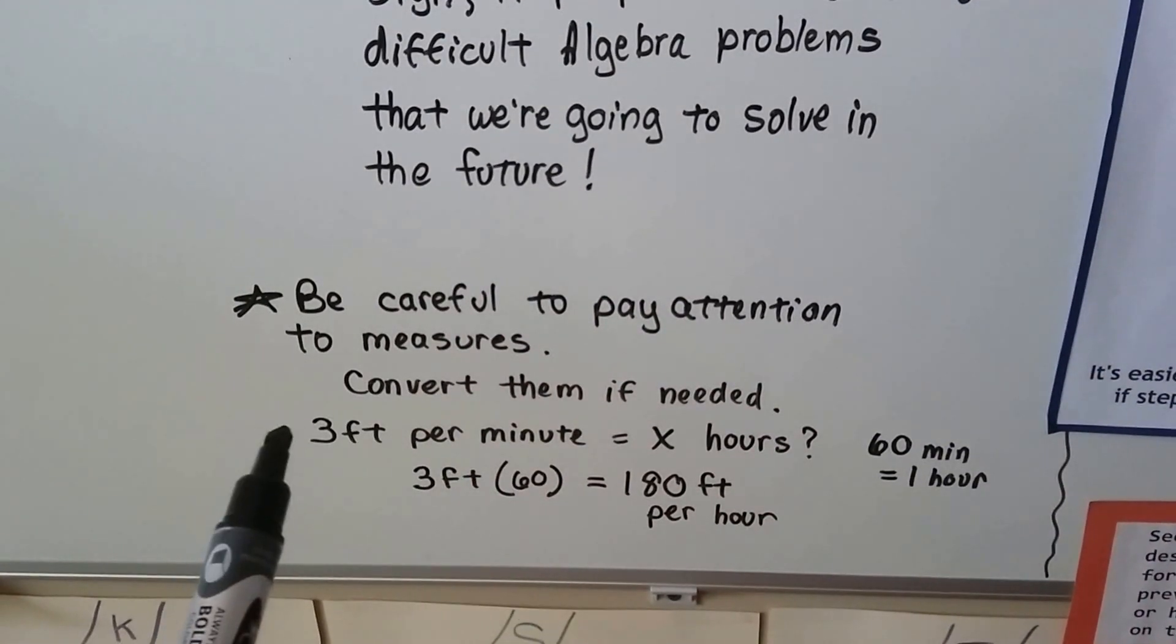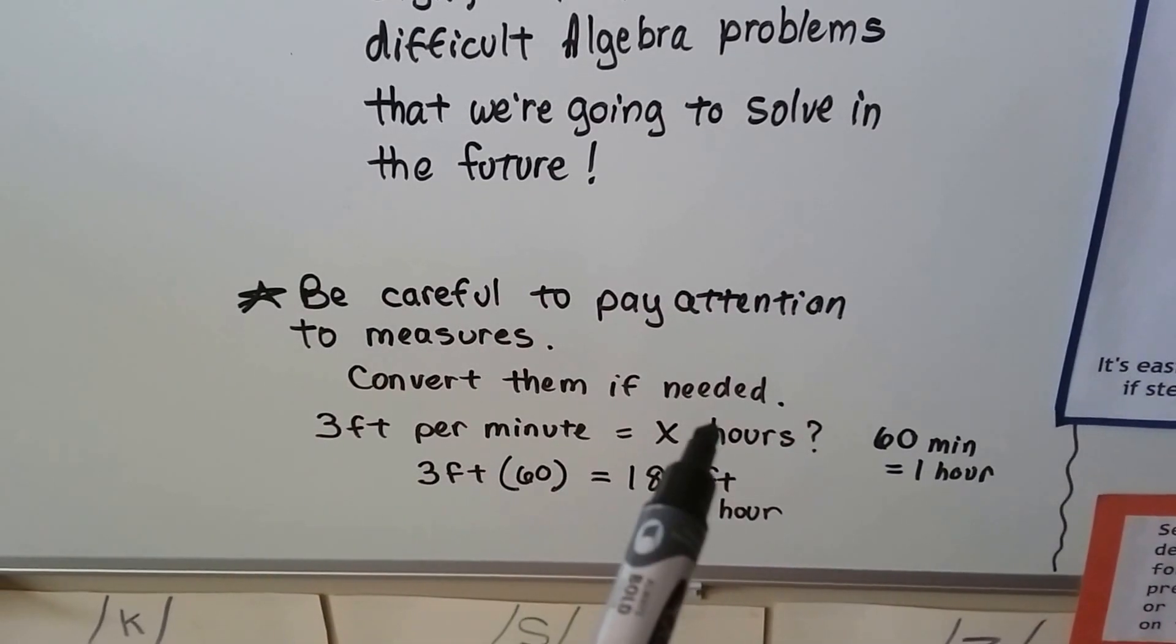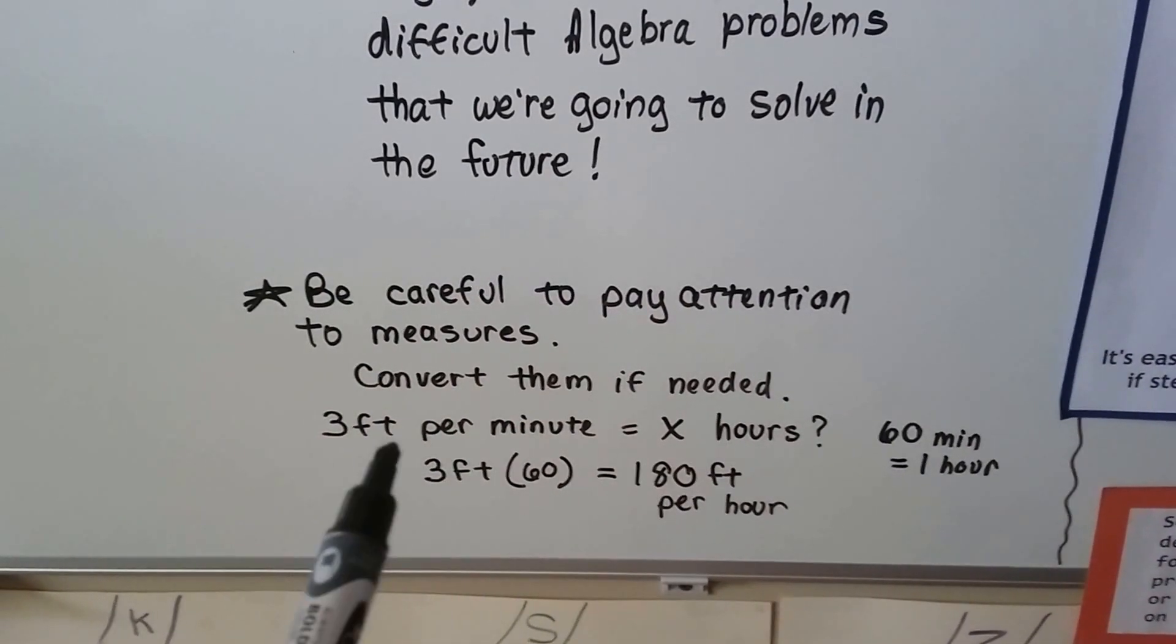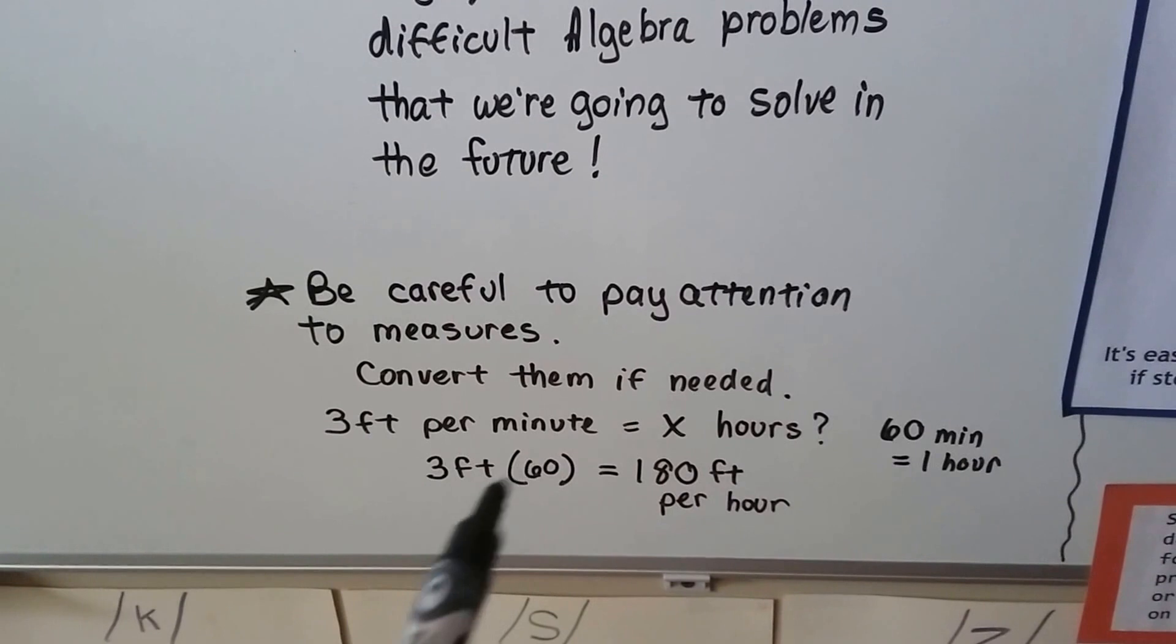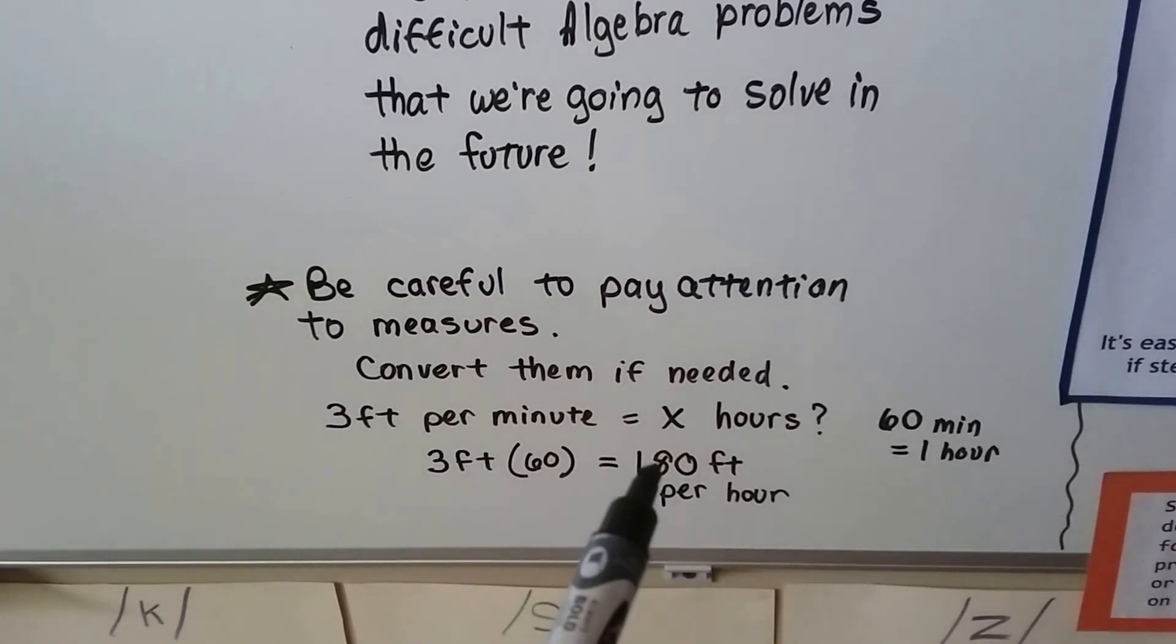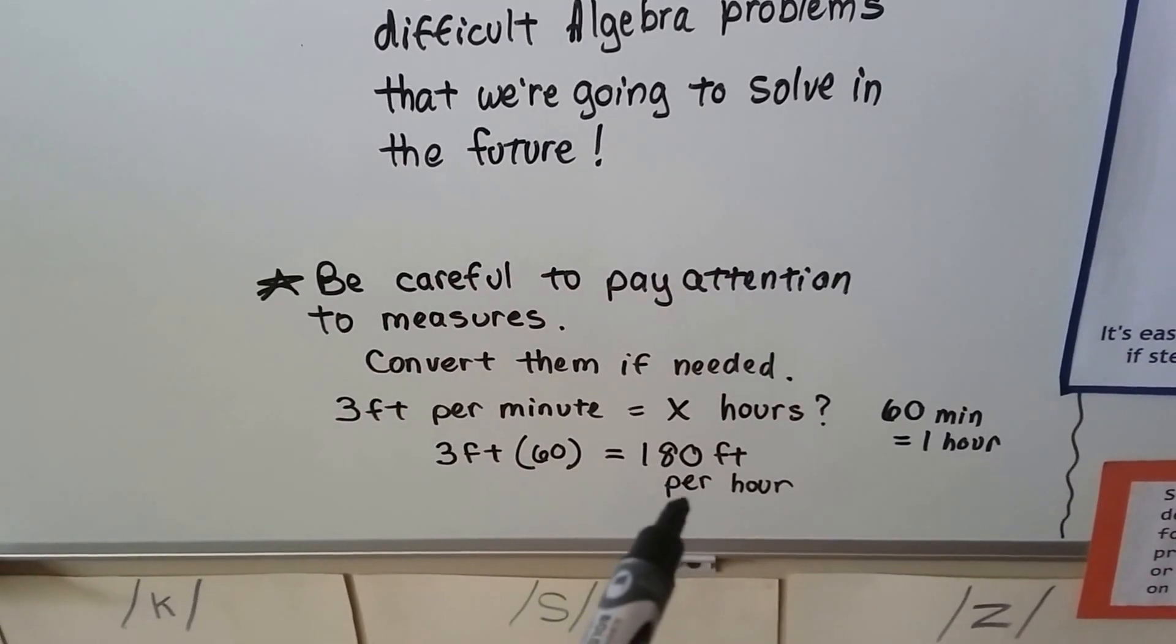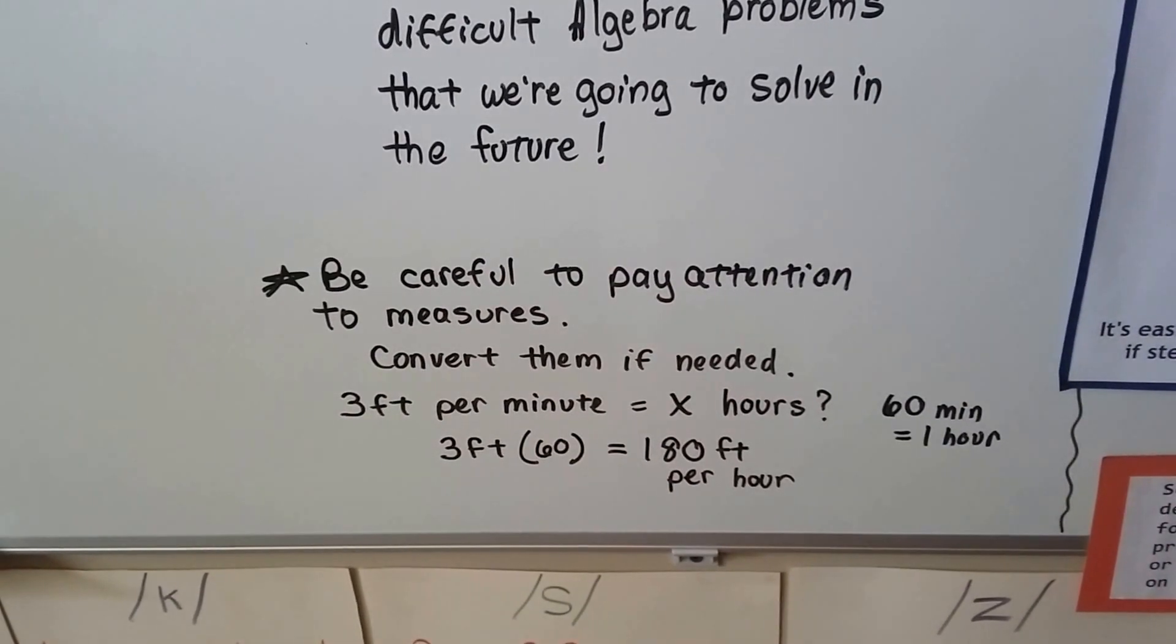If the word problem says something happens at three feet per minute, how many hours does it happen in? Once you find out the minutes, you have to remember, you have to turn them into hours. That would be 180 feet per hour, because there's 60 minutes in an hour.